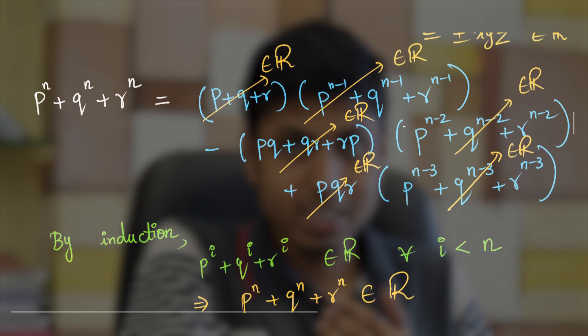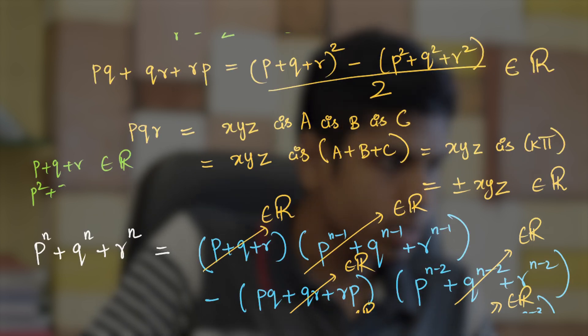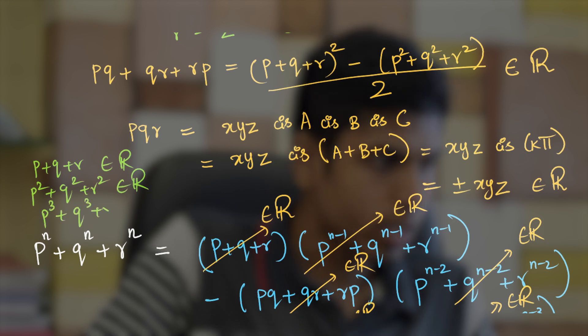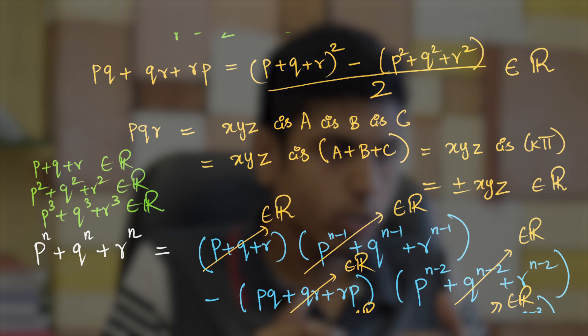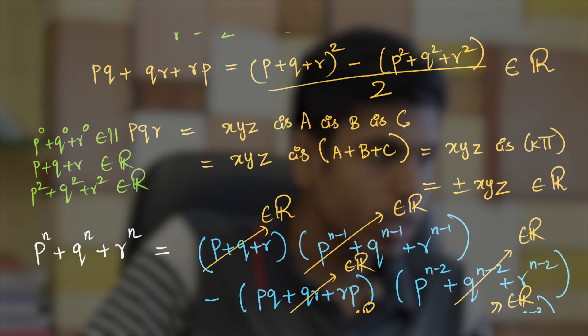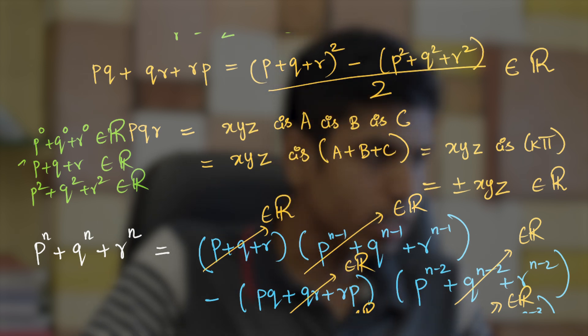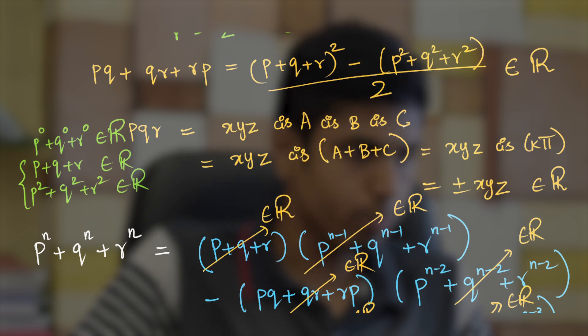The base cases for the induction are: p plus q plus r is real (given), p squared plus q squared plus r squared is real (given), and p^0 plus q^0 plus r^0 equals 3, which is trivially real. So all base cases are satisfied, and the induction step is the key part. This is how we use complex numbers to solve a trigonometric identity. The link for the notes will be in the description. I hope you enjoyed the video — we will meet in the next one. Bye.